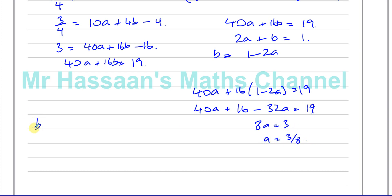And we want to find what b is. Now we know b is 1 minus 2 times a. So b is 1 minus 2 times 3 over 8, so it's 1 minus 3 quarters, which is a quarter. So we can say a equals 3 over 8 and b equals 1 over 4.